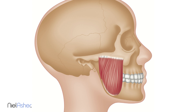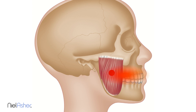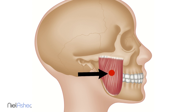The pain distribution from trigger points in the masseter is fascinating. There are essentially three sets of trigger points. The first is in the center of the muscle and will refer pain into the teeth — specifically into the top teeth. You may feel the pain and swear it is in your tooth, but it's actually coming from that trigger point.